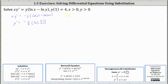So we have v equals y divided by x, and y' is equal to v plus x times v'. Now let's perform substitution. The left side, y', is equal to v plus x times v', and the right side becomes negative v times natural log of v.